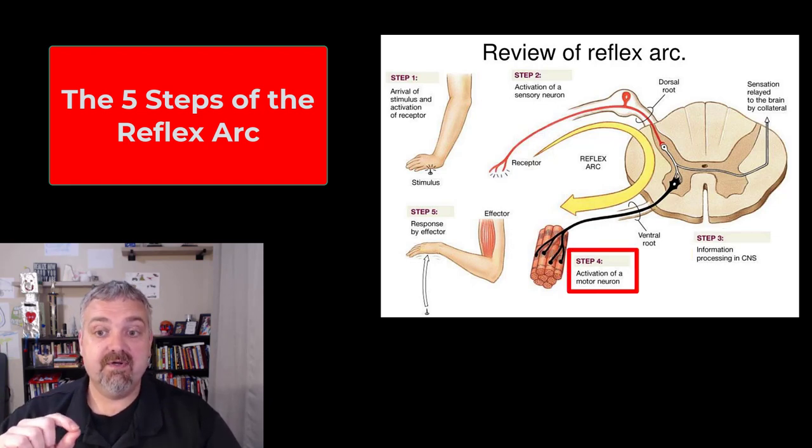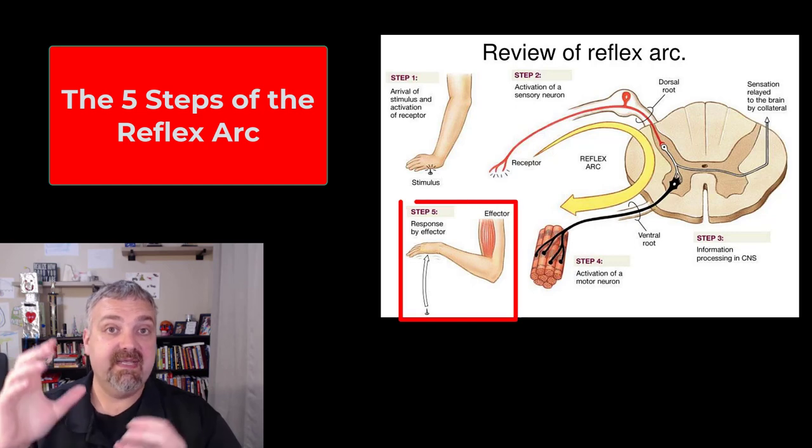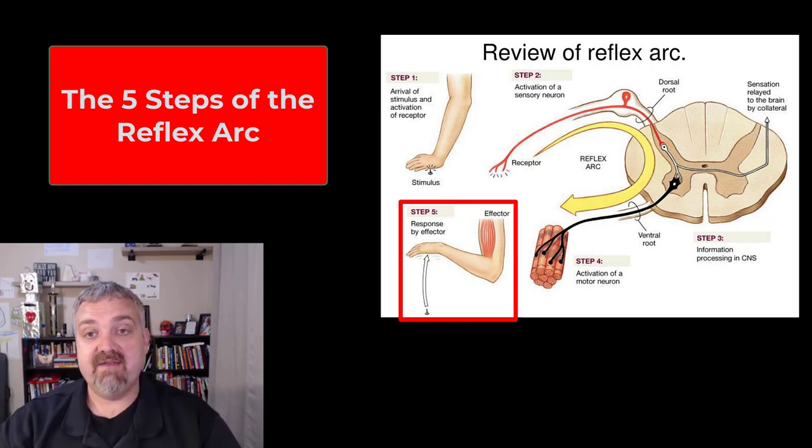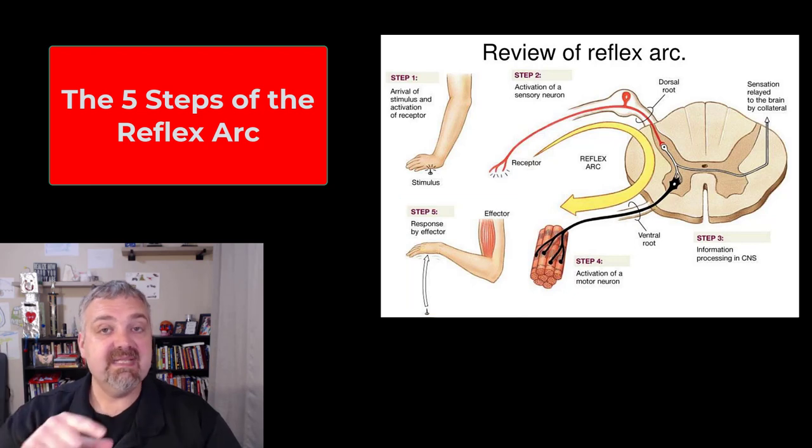Step four, you've now triggered the motor neuron. And then step five is going to be the effector is now going to do its job, which in this case is to withdraw from the painful stimulus.